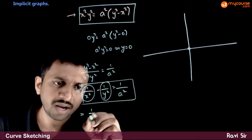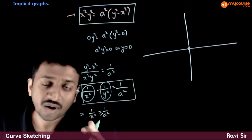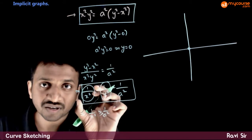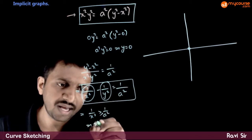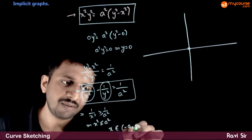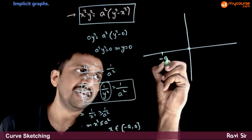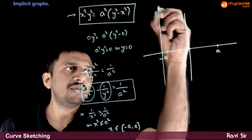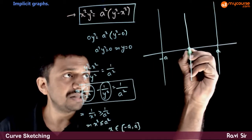This implies 1/x² must be greater than or equal to 1/a², because if it were less than 1/a², subtracting something else cannot yield 1/a². So x² ≤ a², meaning x belongs to [-a, +a]. Thus x must always lie between -a and +a, and the curve passes through the origin.